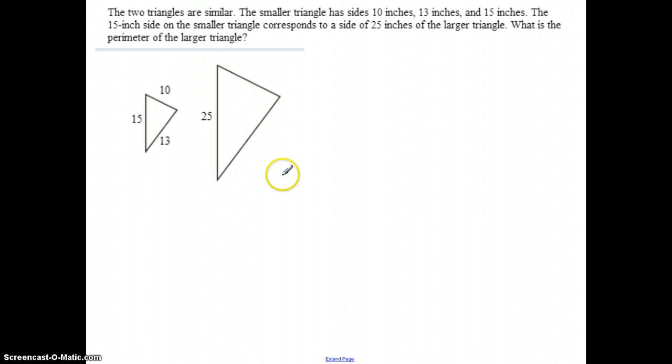Now, they have another one that's set up here, and they would like you to find both missing values. Ultimately, what they want you to be able to do is find the perimeter of this one. If I'm going to set these up, I have to know that these two sides match, these two sides match, and then these two are going to match. So I have to use 15 and 25 as my comparison.